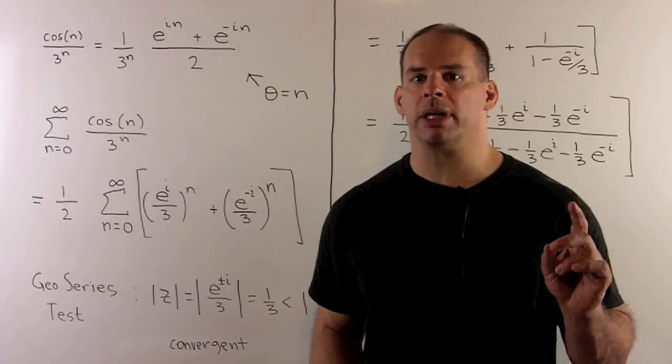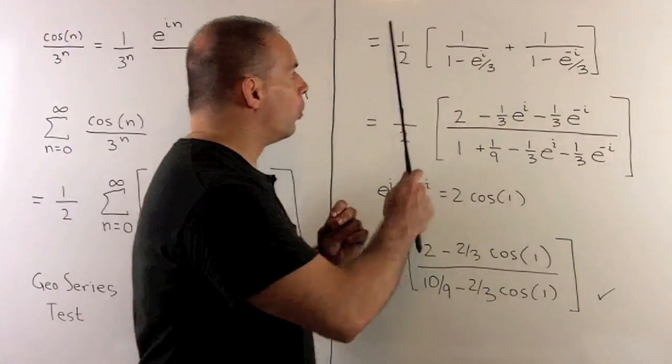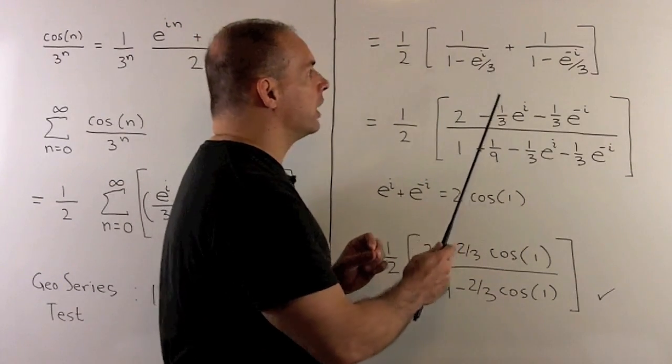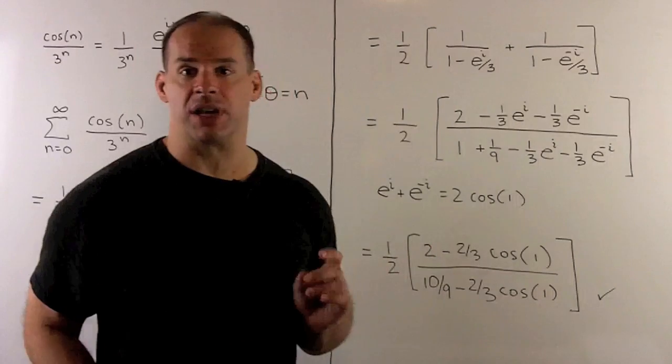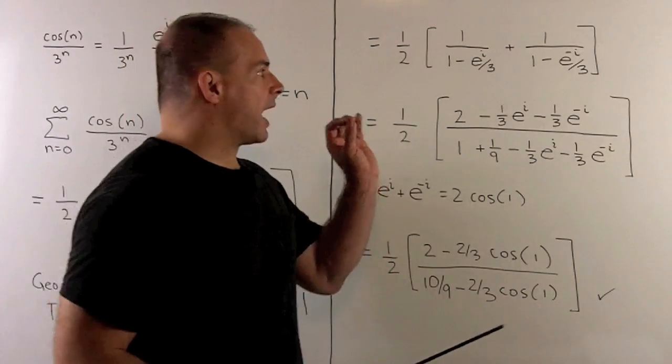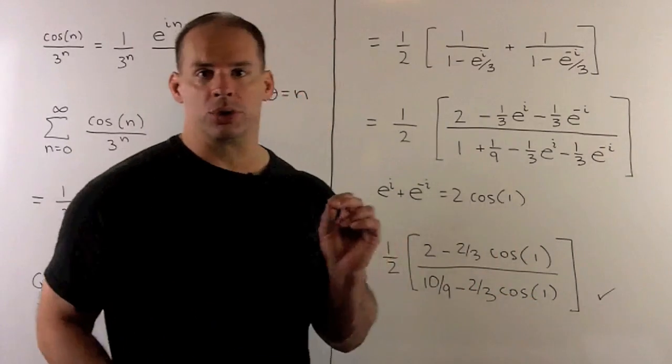That means I can apply the sum formula. So our original sum is equal to 1 half times 1 over 1 minus e to the i over 3 plus 1 over 1 minus e to the minus i over 3. We do our algebra to put everything over a common denominator. Then we'll apply Euler's formula again.